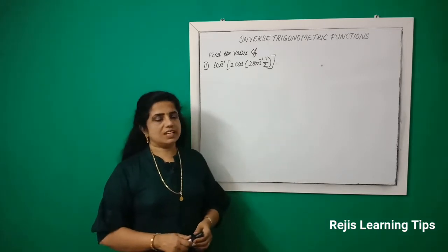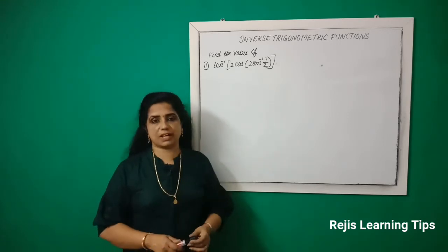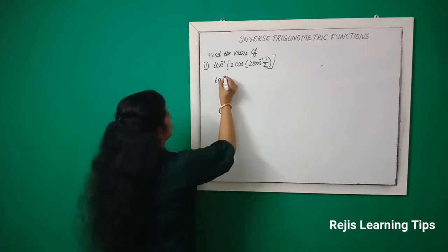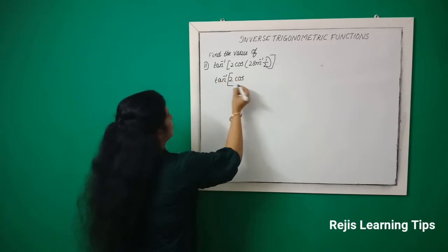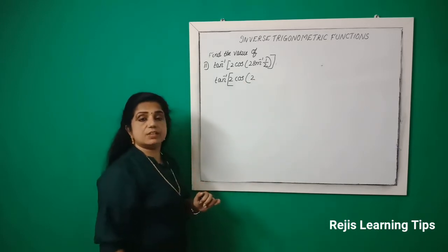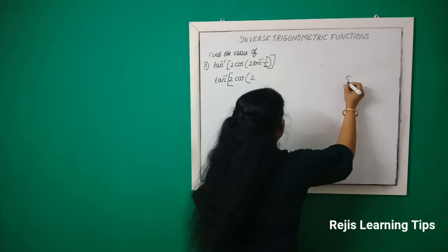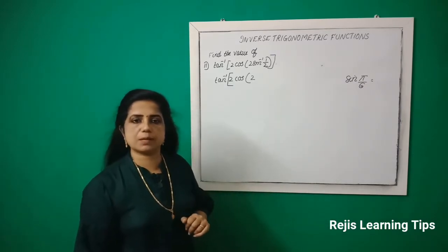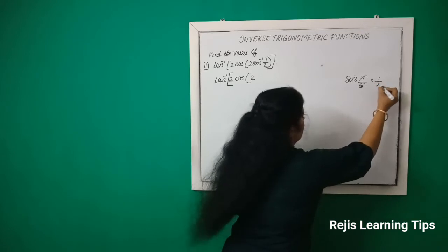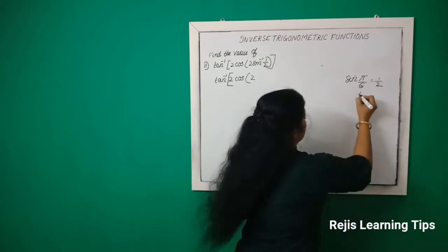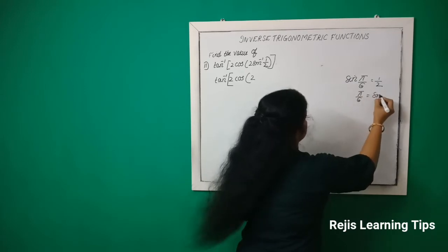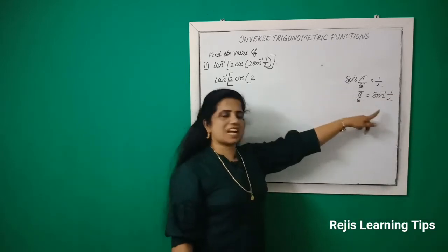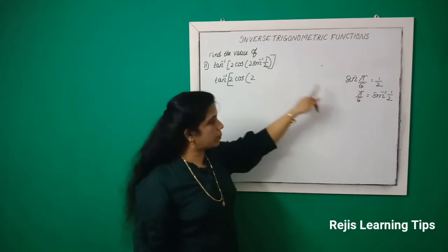11th question: Find the value of tan inverse of cos of 2 sin inverse (1/2). We are going to discuss this. Sin inverse (1/2): the value of sin inverse (1/2) equals π/6, because sin(π/6) = 1/2. So π/6 is equal to sin inverse (1/2). Now, in place of sin inverse (1/2), we will find π/6.